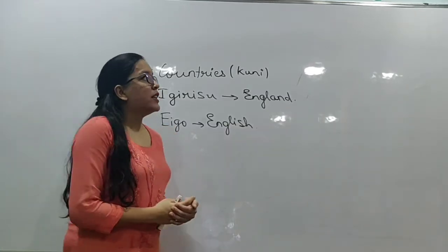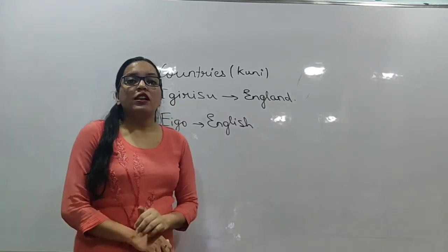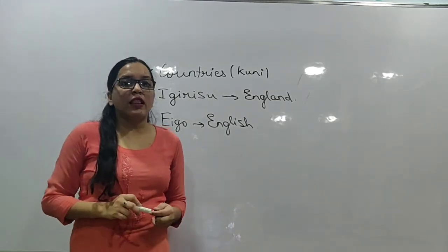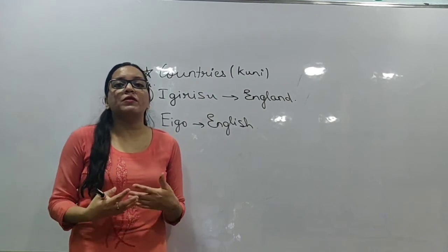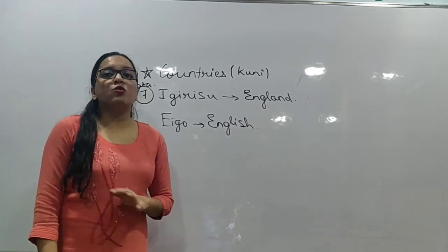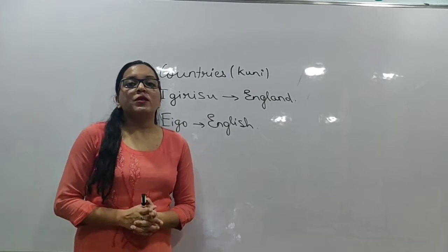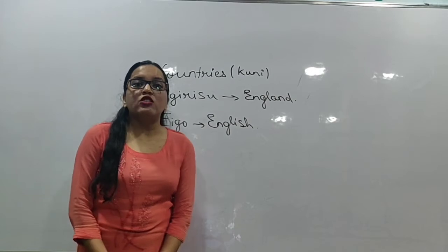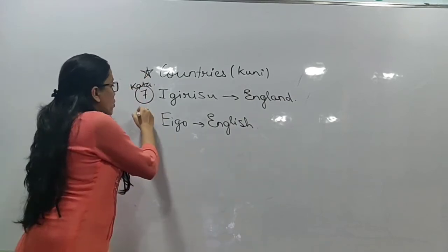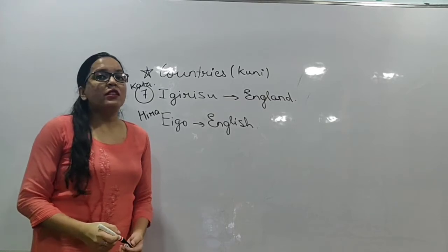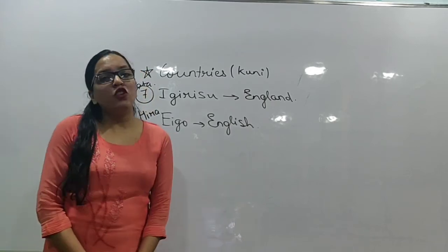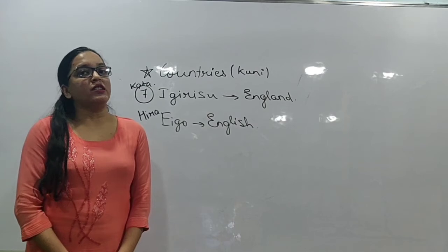England is known as 'Ikirisu' in Japanese — it is a Katakana word, but an exception we cannot guess. However, 'Ikirisu-Go' would be wrong for English. English has its own Japanese word — 'Eigo.' Eigo is their own word for English, so it is in Hiragana. Ikirisu means the country England, while Eigo means the English language. So Ikirisu-Go is incorrect; the correct term is Eigo.